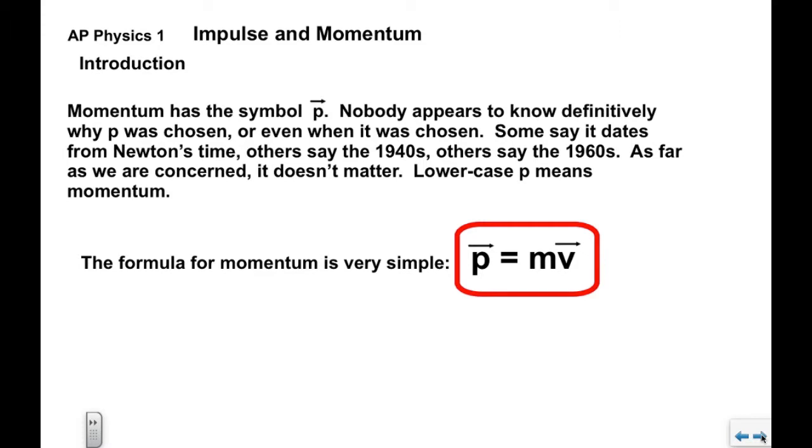Now the formula for momentum is very simple: P equals MV. You'll note that this is in a red box which means it is on your formula sheet. M is mass of course and V is velocity.